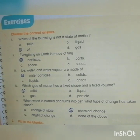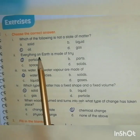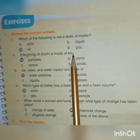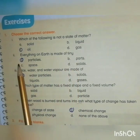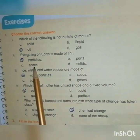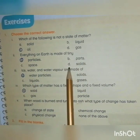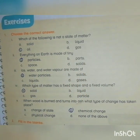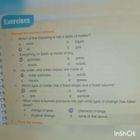Second question: Everything on earth is made of tiny — A. Particles, B. Parts, C. Space, and D. Solids. The answer is Particles, because everything on the earth is made of tiny particles.